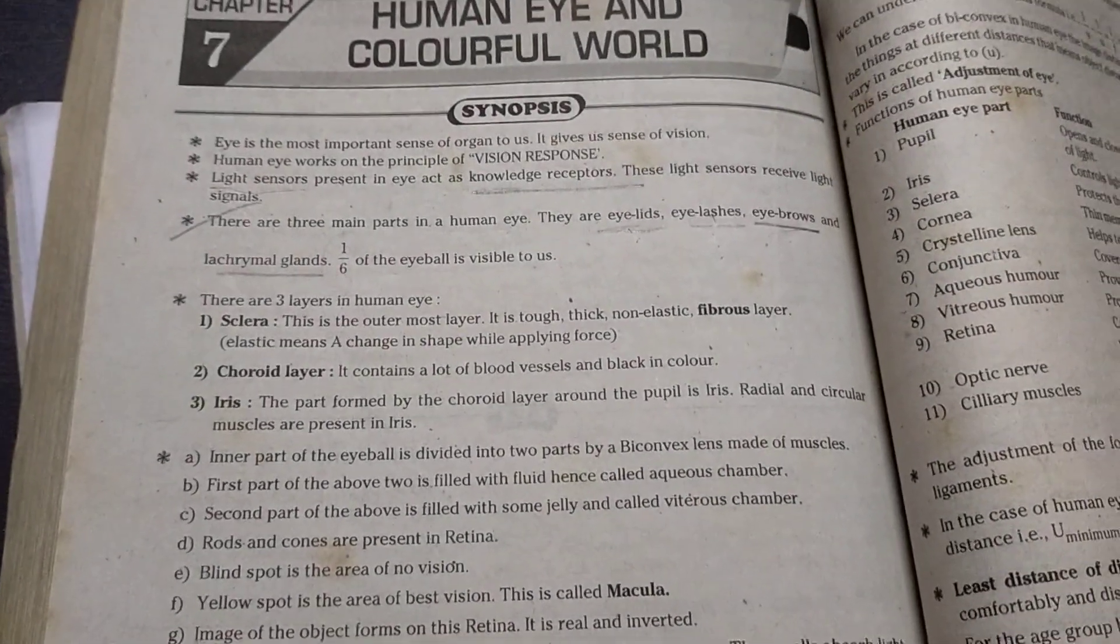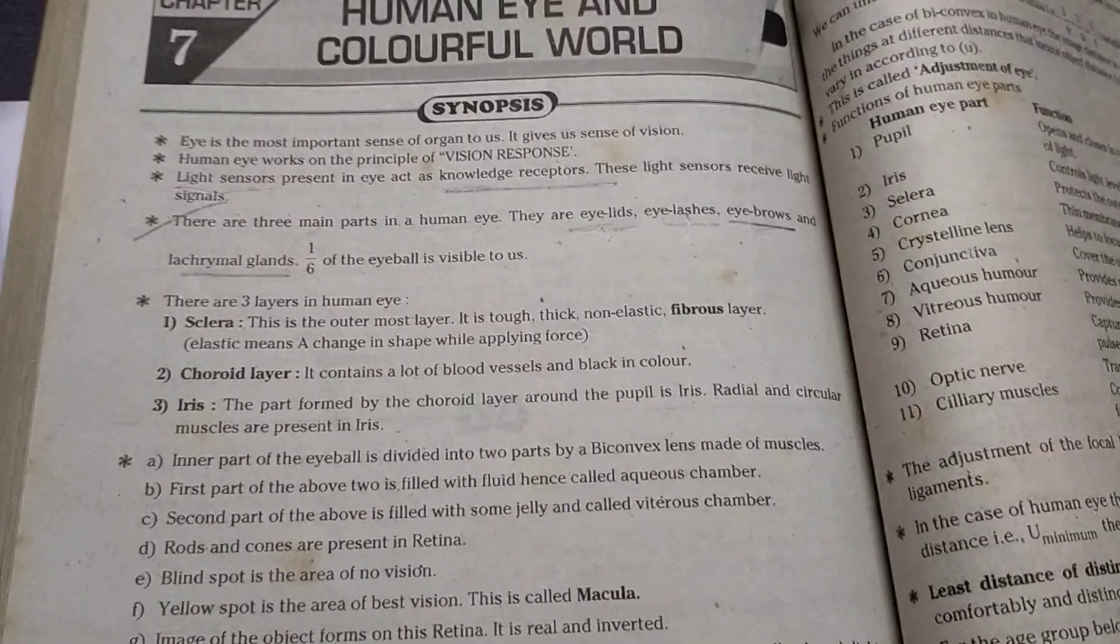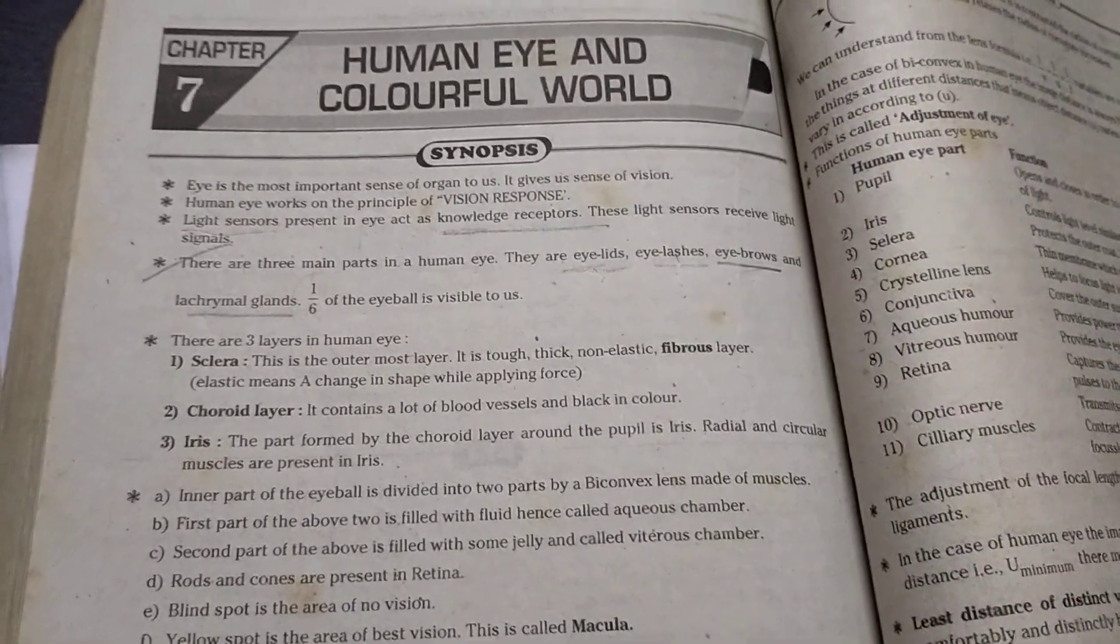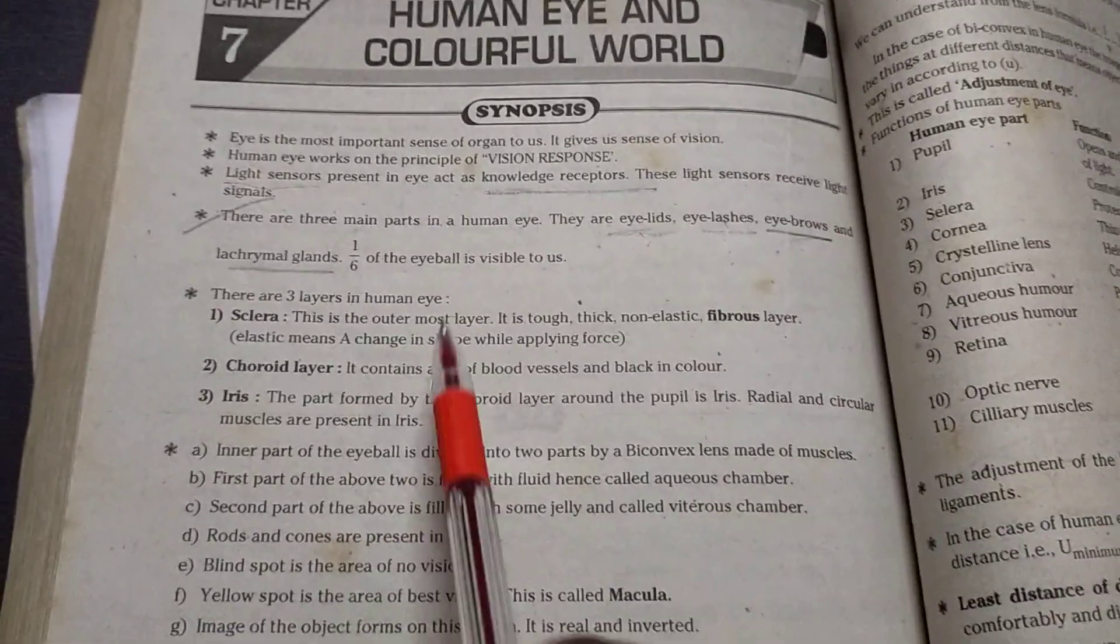So when we see our eye we can see only the one by sixth of the part. But they have five by six part we have left for seeing. It is internally there.